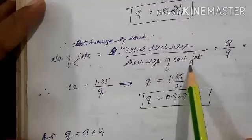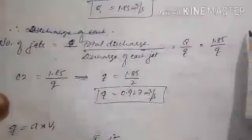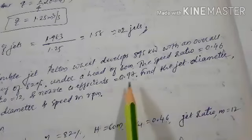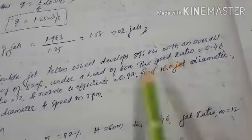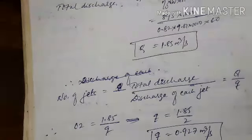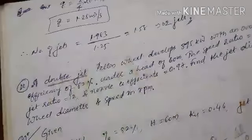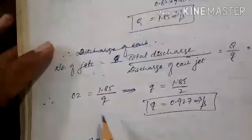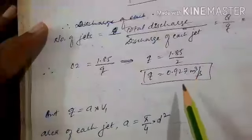Number of jets is given as two (double jet). Discharge per jet = total discharge / number of jets = 1.85 / 2 = 0.925 cubic meter per second. Each jet discharge q = A × V1.